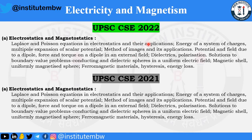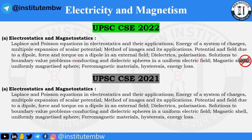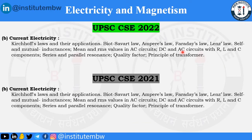Now coming to electricity and magnetism. For electrostatics and magnetostatics, the course for CSE 2022 and CSE 2021 are the same — there is no change. For the sub-part on current electricity, if you analyze and compare both years, there is no change.